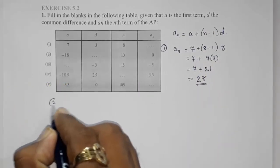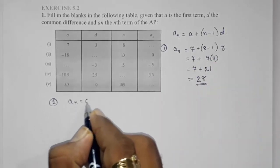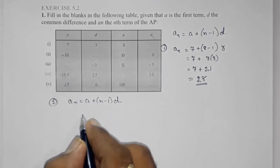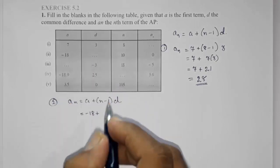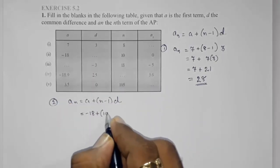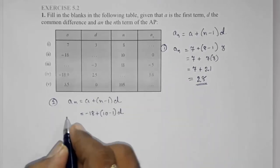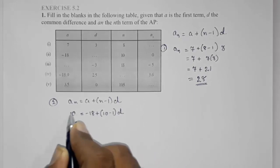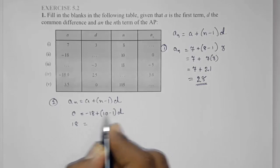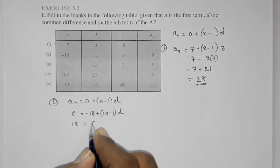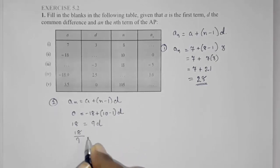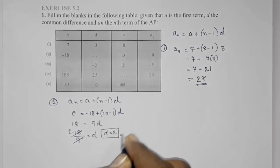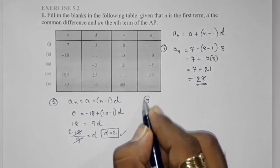Moving to Answer 2: putting into the same formula, an equals a plus n minus 1 into d. Here a is minus 18, n is 10, and an is 0 — we want to find d. Taking minus 18 to the other side gives 0 plus 18, which is 18. Then 10 minus 1 is 9, so 9d equals 18, and d equals 2.